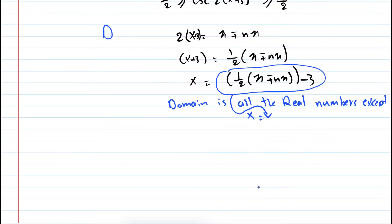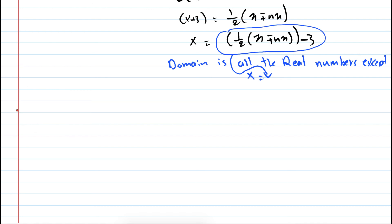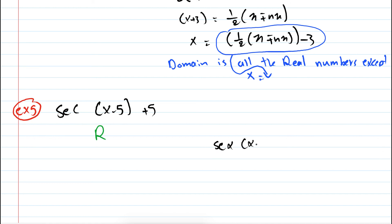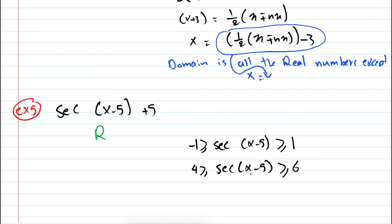Lastly, let me give an example with secant. Example 5: suppose we have secant of (x minus 5) plus 5, and we're asked to find the domain and range. For the range: secant of (x minus 5) takes values ≥ 1 or ≤ -1. Adding 5, we get: -1 + 5 = 4 and 1 + 5 = 6. So the range is all y values ≥ 6 or ≤ 4.